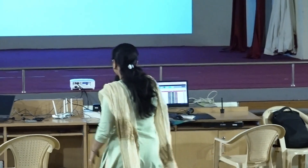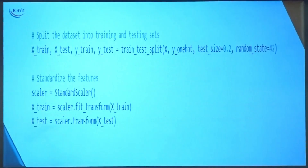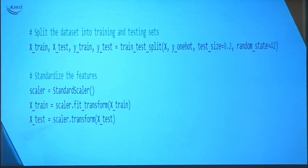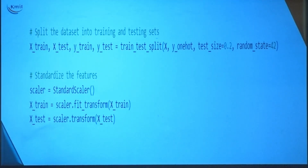When we say standardization, the scaling parameters we calculate are mean and standard deviation of that particular data. We split the data to get x_train, x_test, y_train, y_test. Then we standardize the data so that all features are on one scale.